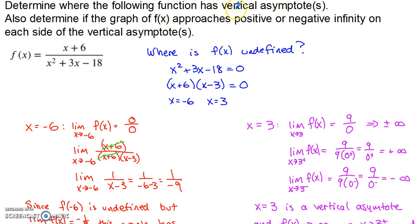Here's a problem where we're asked to find where a function has vertical asymptotes. And then at each vertical asymptote, we'd like to decide if the graph trends toward positive infinity or negative infinity.